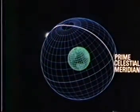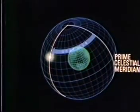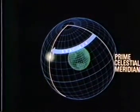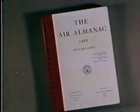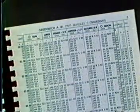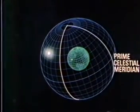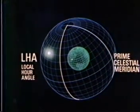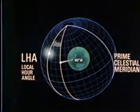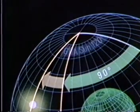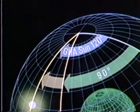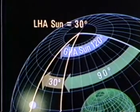Using the sun as an example, we may measure its Greenwich hour angle at any given moment from the prime celestial meridian, westerly to the hour circle of the sun. This angle is referred to as GHA sun. The Air Almanac lists the sun, moon, and planets for any date and time this data is desired. The second of the three hour angles, local hour angle, is measured from the observer's celestial meridian westerly to the hour circle of the celestial body. If the observer is at 90 degrees west and the GHA of the sun is 120 degrees, then LHA sun is 30 degrees.